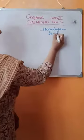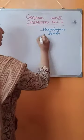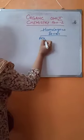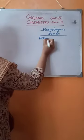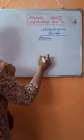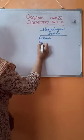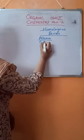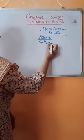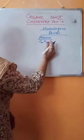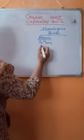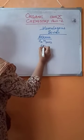Homologous series — for example, alkanes. The alkanes form a homologous series. All the alkanes will have a general formula of CₙH₂ₙ₊₂, where N is the number of carbon atoms. Just look at the series.